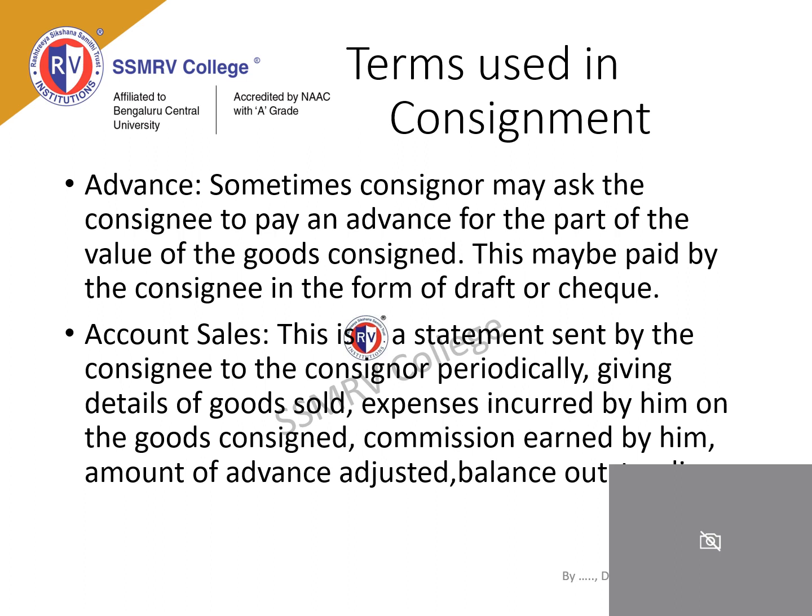The next term is account sales. This is a statement sent by the consignee to the consignor periodically, giving details of goods sold, expenses incurred, commission earned, advance adjusted, and balance outstanding. Account sales is basically a statement prepared by the consignee and sent to the consignor periodically, showing how much goods were sold, the expenditure incurred, the commission earned, and what balance amount remains to be settled.